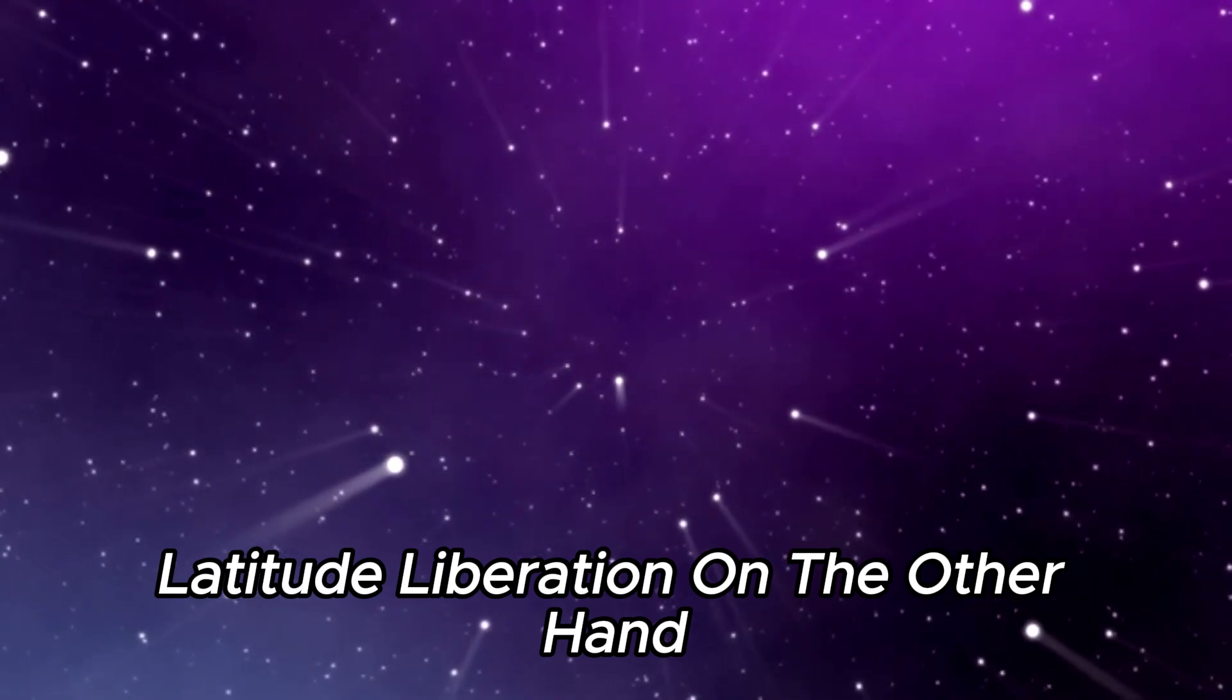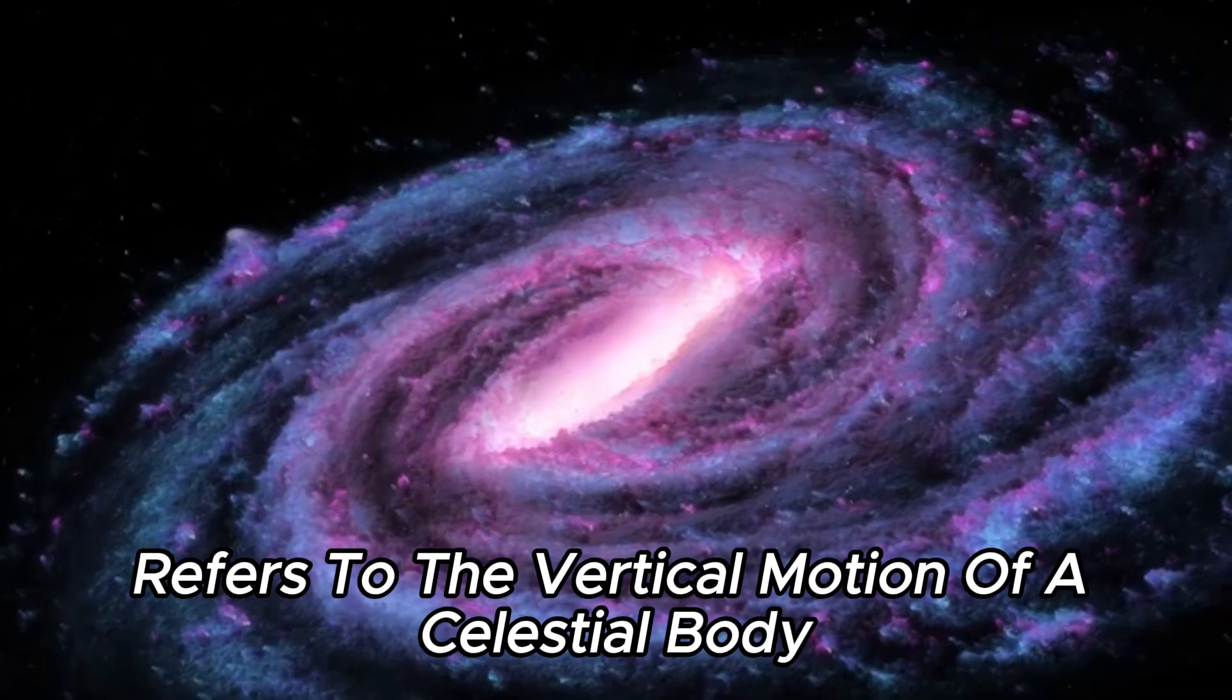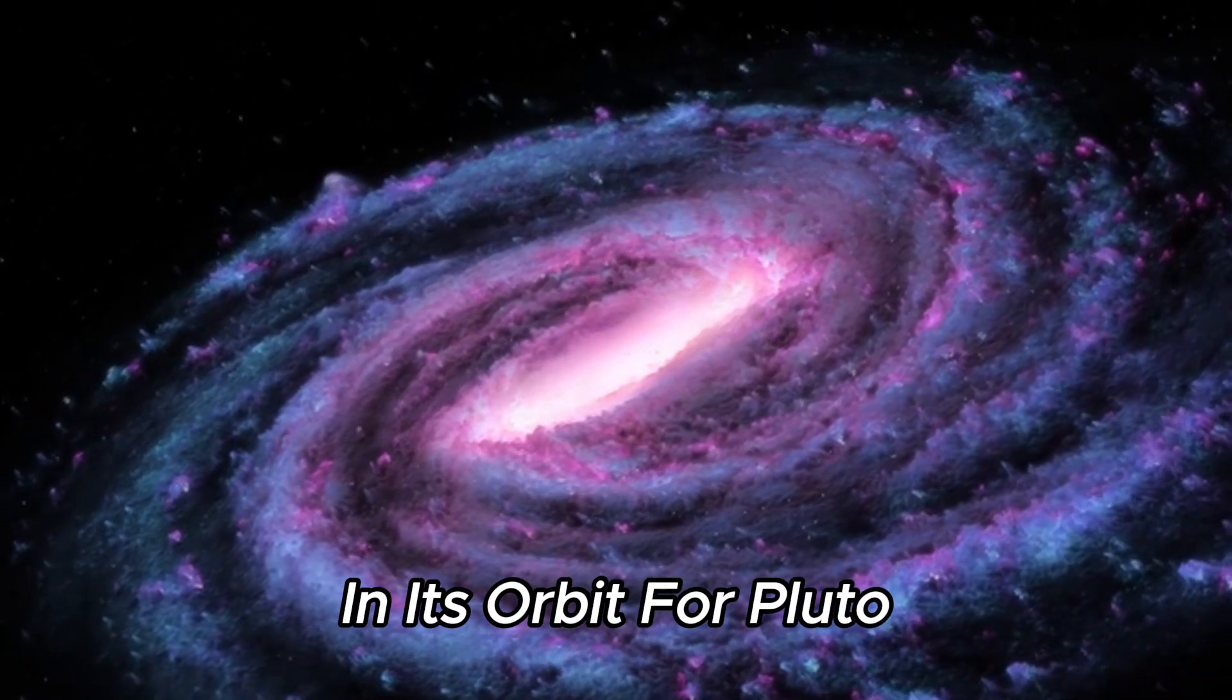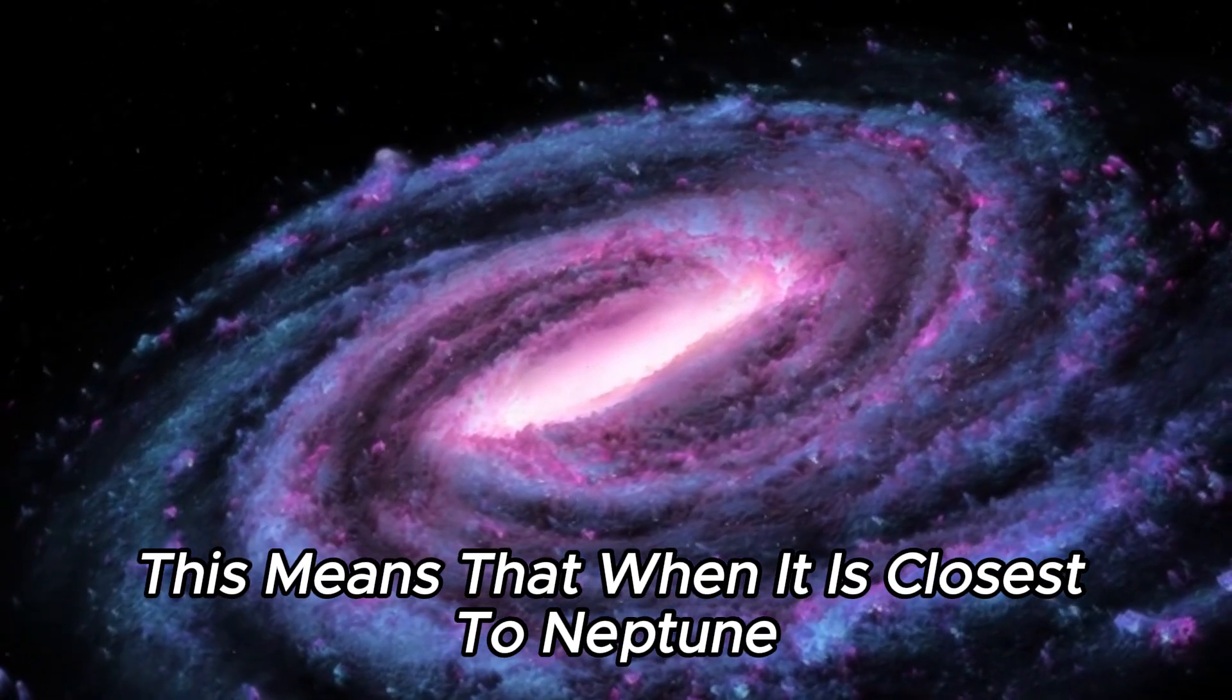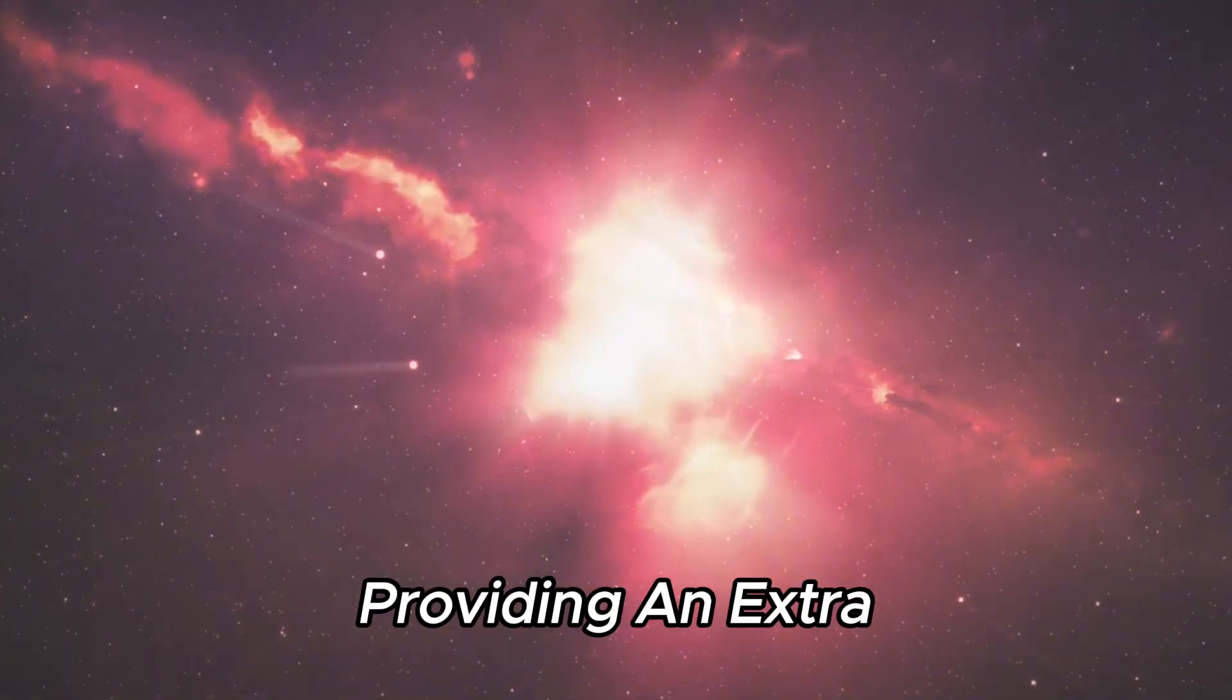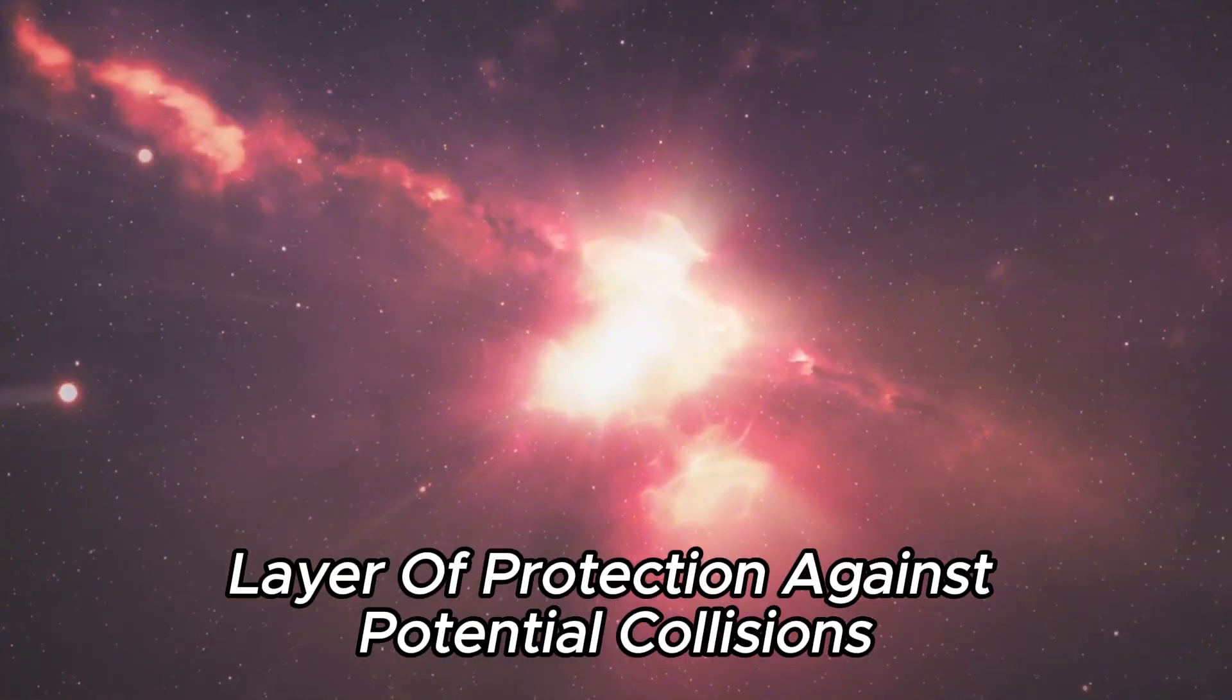Latitude libration, on the other hand, refers to the vertical motion of a celestial body in its orbit. For Pluto, this means that when it is closest to Neptune or another giant planet, it will be well above their orbital plane, providing an extra layer of protection against potential collisions.